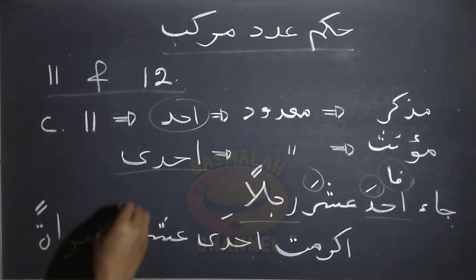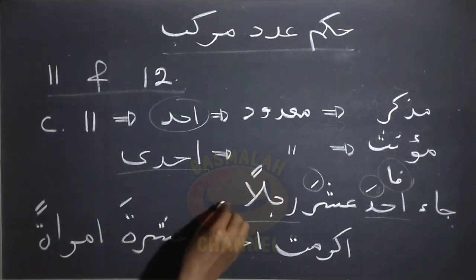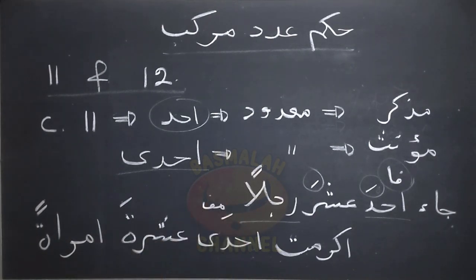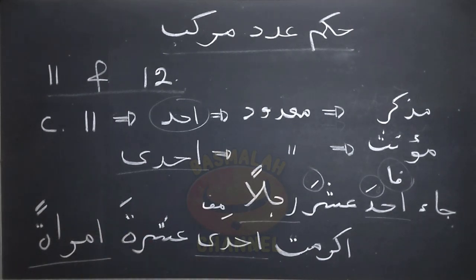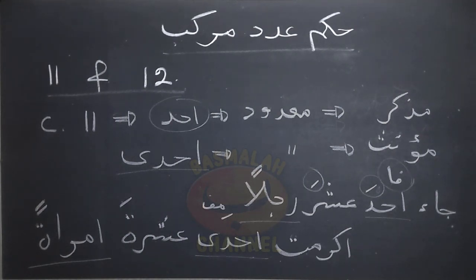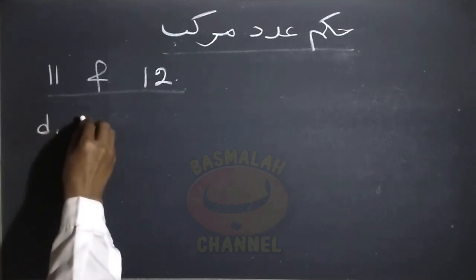Di sini makdudnya berupa lafaz mu'anas, maka untuk bilangan sebelas ini satuannya menggunakan lafaz Ihda: Ihda Ashrata Imroatan. Kemudian ketentuan yang keempat adalah khusus untuk bilangan adat yang berupa bilangan dua belas, satuannya yaitu bilangan dua ini hukumnya diirob sebagaimana isim tasniah.